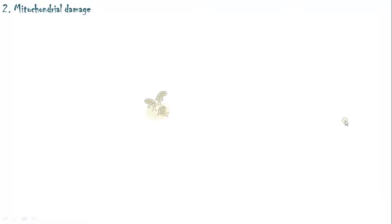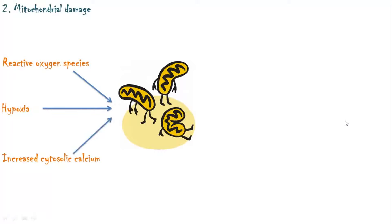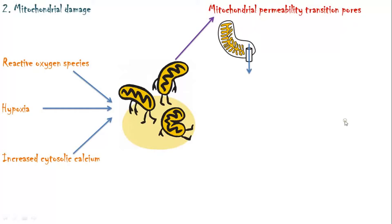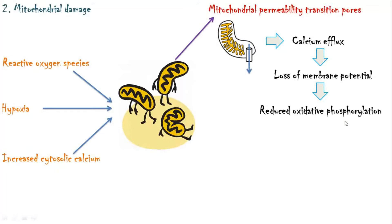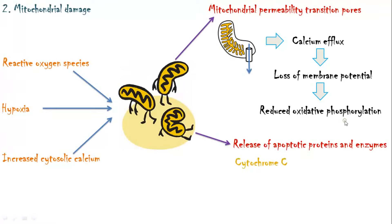The second mechanism is mitochondrial damage. Mitochondria can be damaged by reactive oxygen species, hypoxia, and increased cytosolic calcium levels. There are two major consequences: formation of high-conductance mitochondrial permeability transition pores, which allow calcium ions to leak freely into the cytosol, causing loss of mitochondrial membrane potential and further reduction in ATP synthesis; and release of apoptotic proteins and enzymes such as cytochrome C and caspases, which trigger cell death by apoptosis.